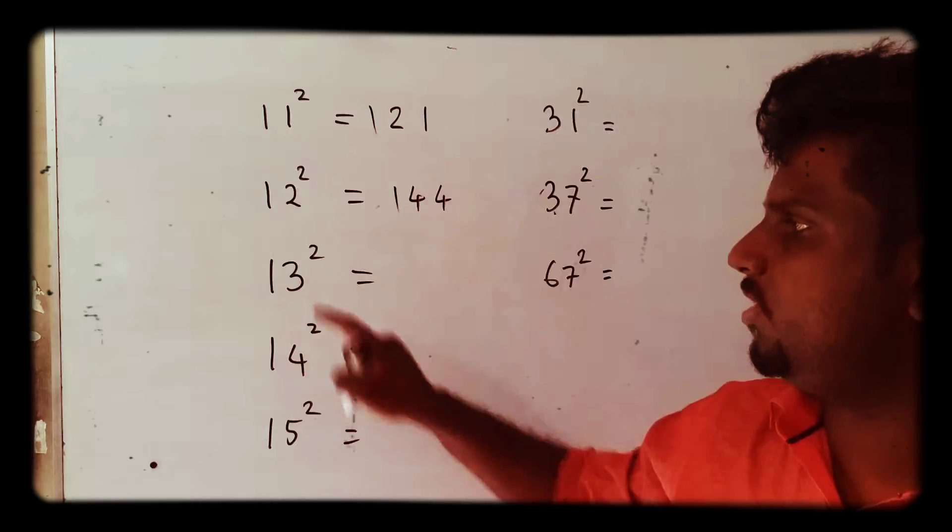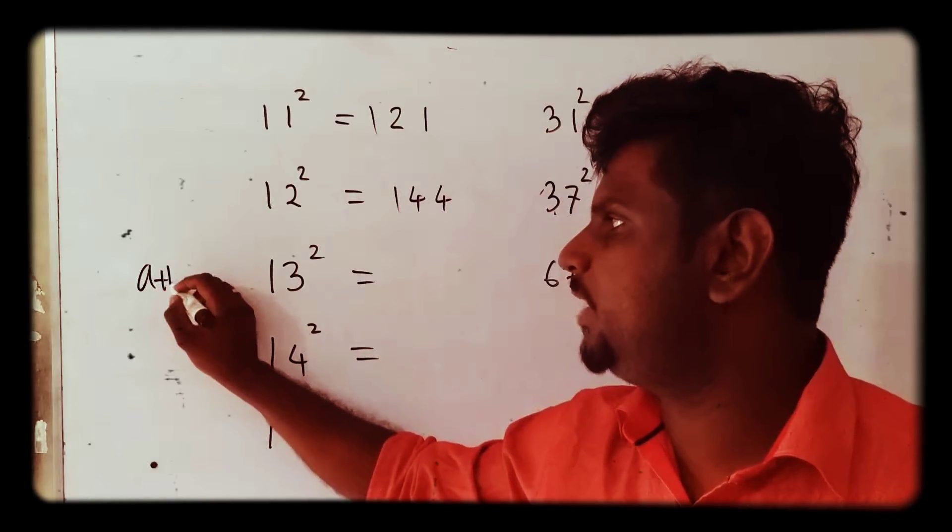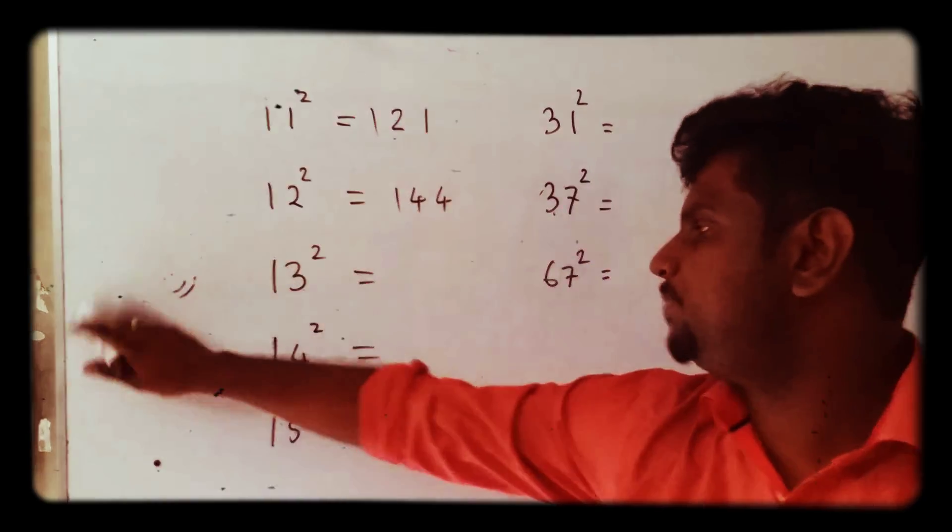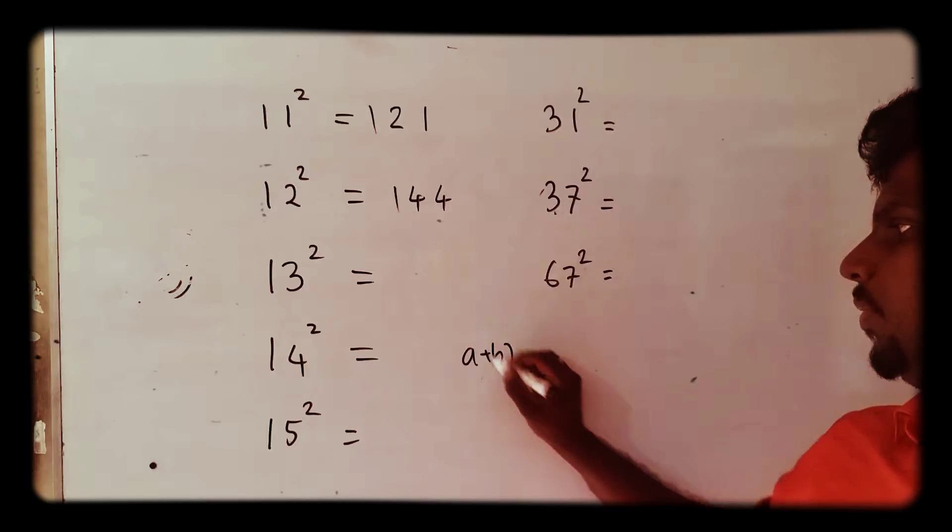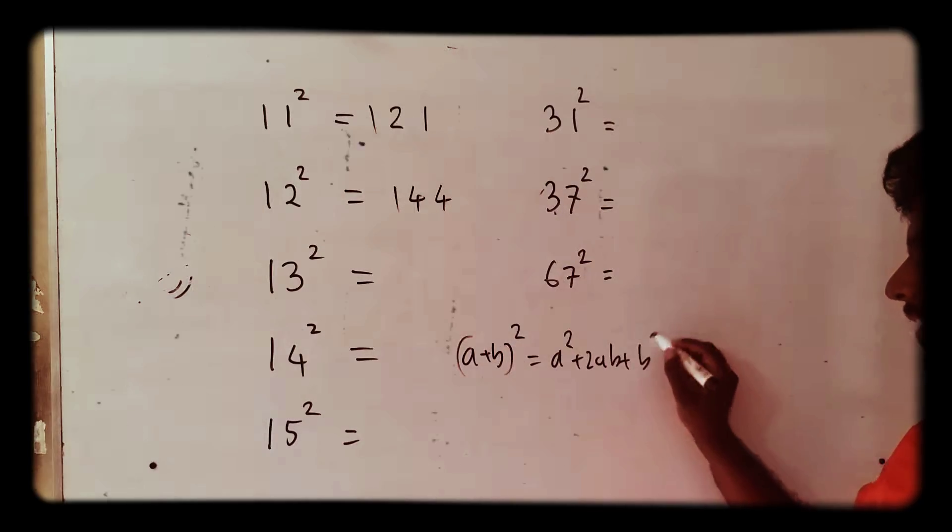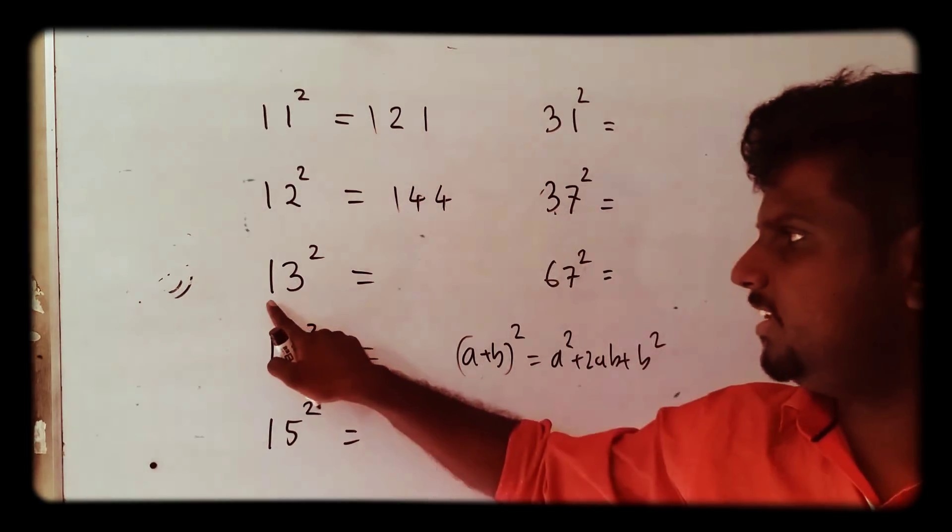With this number squared, it's just like (a+b)². We know that it was (a+b)², right? a² + 2ab + b². Likewise, we consider this - we don't consider the plus here, just ab.